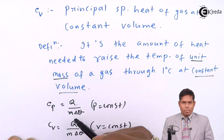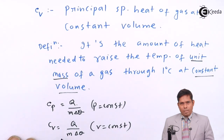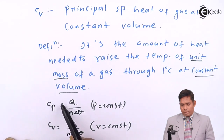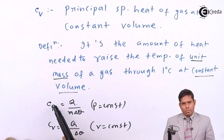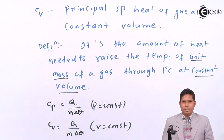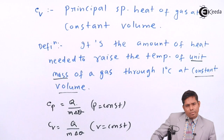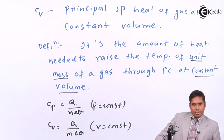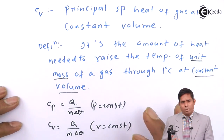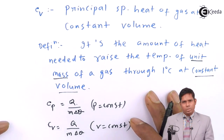You must remember that Q is not the same in both cases — one is heated at constant pressure and the other at constant volume. The heat required at constant pressure will be more, and at constant volume it will be less. Cp is always greater than Cv. That relation is called Mayer's relation: Cp equals Cv plus R, where R is the universal gas constant.